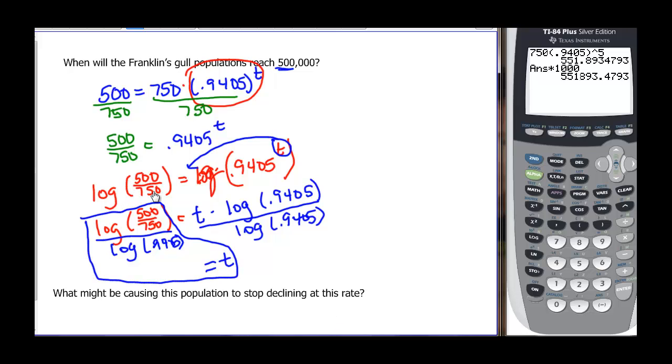Now we know that t is equal to this log, and I'm not going to rewrite it. I'll just write my answer like this. That is exact. If we wanted to know approximately what that is, we'd have log 500 divided by 750, divided by the log of 0.9405, close the parenthesis. So in approximately 6.6 years or 7 years after 2000, there will be 500,000 gulls left.